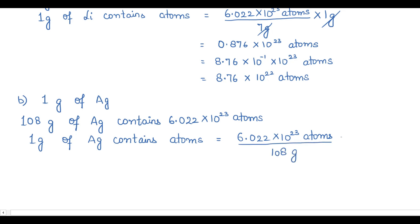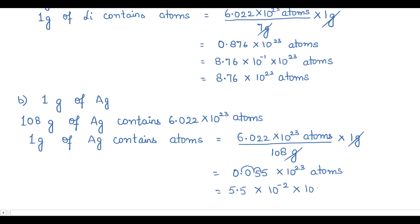Cancelling grams, when I divide 6.022 by 108 the answer is 0.055 × 10²³ atoms. Moving the decimal two places right gives 5.5 × 10⁻² × 10²³. Adding the powers: −2 + 23 = 21, so the answer is 5.5 × 10²¹ atoms.